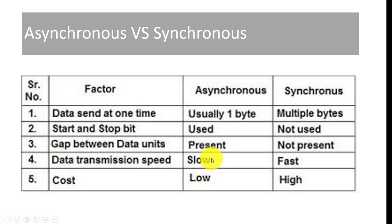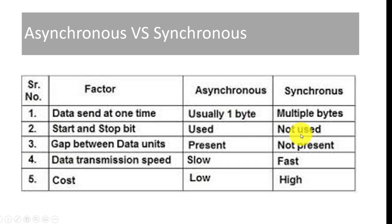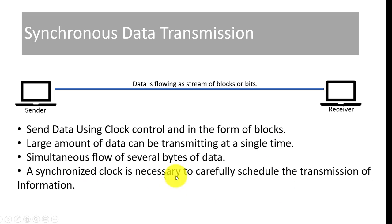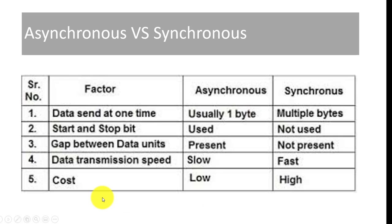Regarding data transmission speed, asynchronous is slower because it travels one byte at a time, which reduces speed, and it is used by computers that are themselves slow. In synchronous data transmission, the transmission speed is faster because simultaneously many bytes begin traveling at once. Therefore, synchronous data transmission is faster. Regarding cost, asynchronous is simpler and uses no complex components. In synchronous, there is a clock — a synchronized clock that schedules the transmission — which adds an extra feature and increases the cost of synchronous transmission.